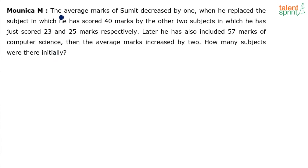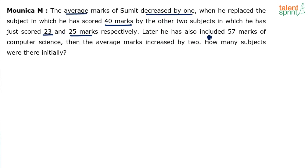This is an interesting problem on averages. The average marks of Sumit decreased by 1 when he replaced the subject in which he scored 40 marks by two other subjects where he scored 23 and 25 respectively. Later, he also included 57 marks of computer science — another subject — and then the average marks increased by 2. How many subjects were there initially is the question.